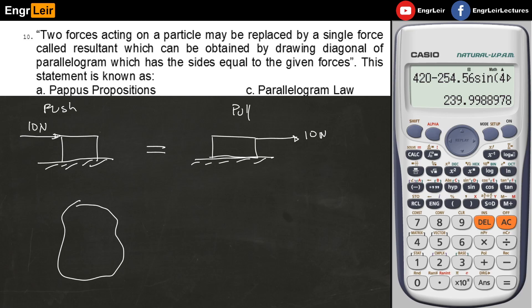If you have an object with a force P, I can transfer the force P along its line of action. Since this is the line of action, I can actually put the same force P here and it will still have the same effect. That's transmissibility in mechanics.